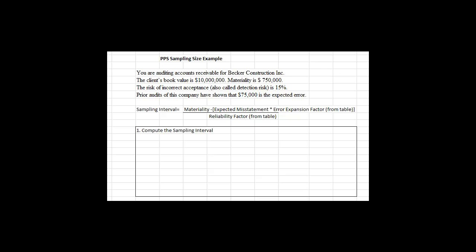For this sample problem, the risk of incorrect acceptance is set at 15%, and that drives some of the calculations we're about to do. Prior audits of this company have shown the expected total error in all of the subsidiary balances combined. So one could be off by $70,000 and all the others off by a combined $5,000, and the balance would be wrong by $75,000.